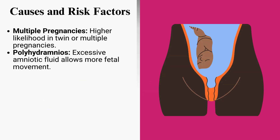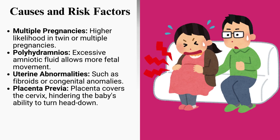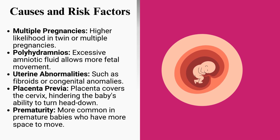Causes and risk factors include: multiple pregnancies, which have a higher likelihood in twin or multiple pregnancies; polyhydramnios, where excessive amniotic fluid allows more fetal movement; uterine abnormalities such as fibroids or congenital anomalies; and placenta previa, where the placenta covers the cervix, hindering the baby's ability to turn head down.